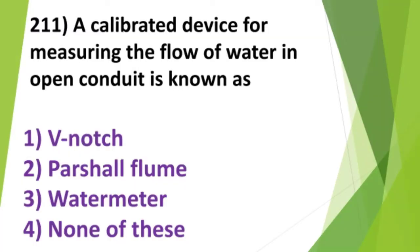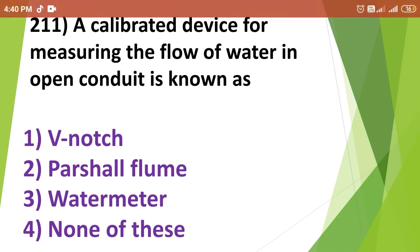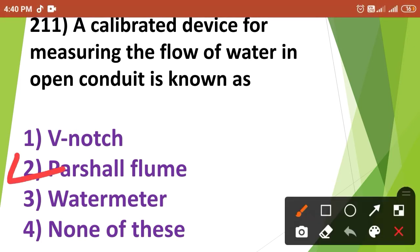Question No. 211: A calibrated device for measuring the flow of water in open conduit is known as: 1. V-notch, 2. Parshall flume, 3. Water meter, 4. None of these. The correct answer is Option No. 2, i.e., Parshall flume.